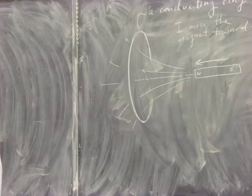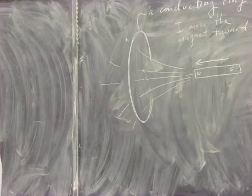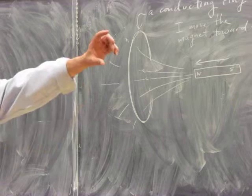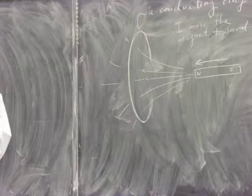As you move the magnet towards the ring, the area of the ring stays the same, but the magnetic field is going to increase. If I start with a magnet way back here and the ring is way over there and I run towards it, the magnetic field of the ring is going to increase over time.